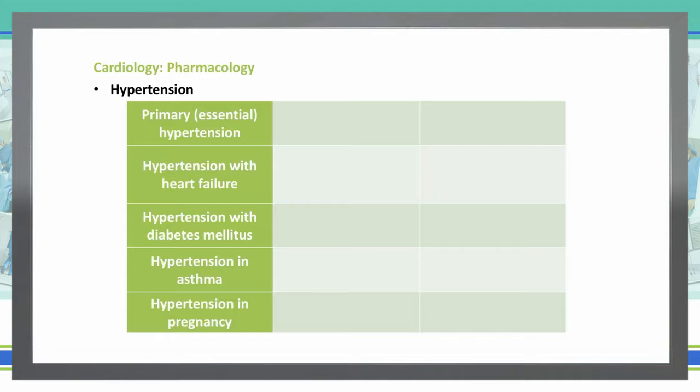In primary essential hypertension, the medications we use are thiazides, ACE inhibitors or ARBs — which are angiotensin receptor blockers — and dihydropyridine calcium channel blockers.